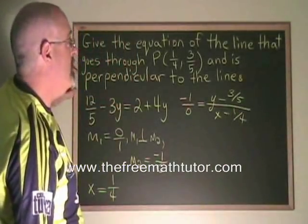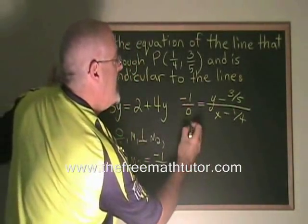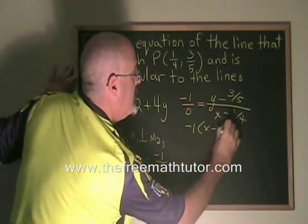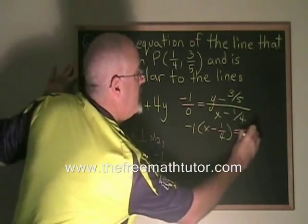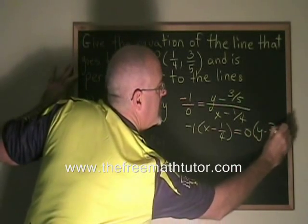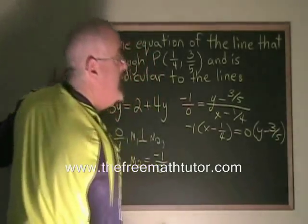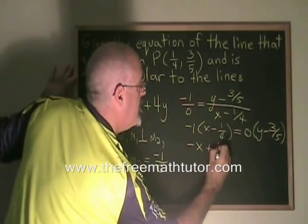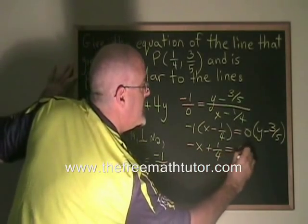Cross multiplying, negative 1 times x minus 1 quarter will be equal to 0 times y minus 3 fifths. Of course, 0 times anything is 0, so this becomes negative x plus 1 quarter equals 0.